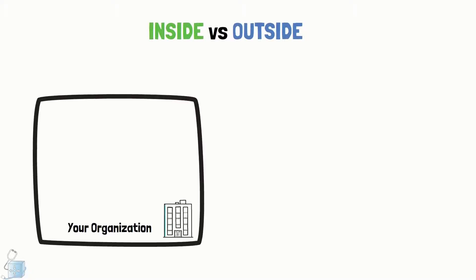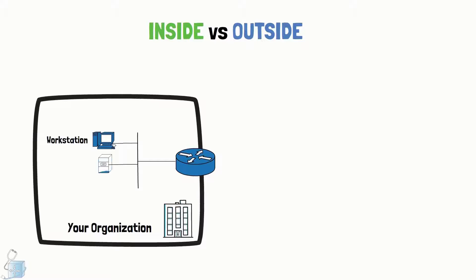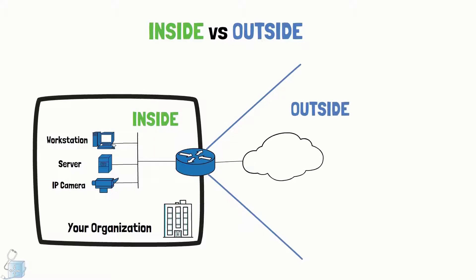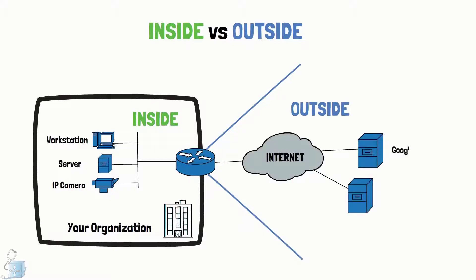In the previous lecture, we thoroughly understood the terms inside and outside when it comes to NAT. Just to repeat that, inside is where your organization's devices physically exist, while outside is where the devices outside of your organization physically exist. A Cisco router cannot know that by itself — we have to define it using the interface-level command IP NAT inside for the inside zone and IP NAT outside for the outside zone.